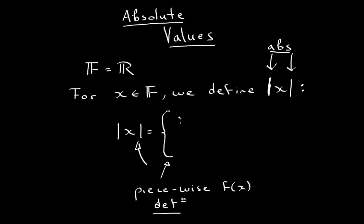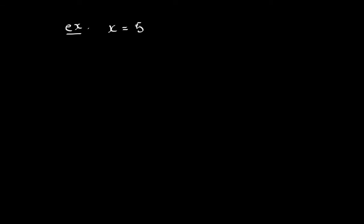Basically what this says is: if you give me an x, this function will keep it as x — it won't do anything to your input — if x is greater than or equal to zero. Now if you give me a negative value, if x is less than zero, then it will put a negative sign in front of it. Let me give you some examples.